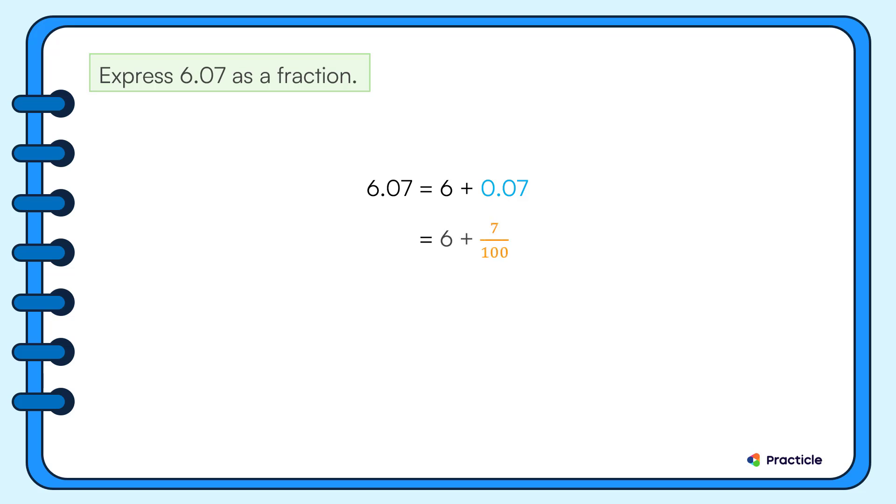This brings us to the last step. Let's put the whole number and the fraction part together. 6 plus 7 out of 100 is 6 and 7 out of 100. This is how we write 6.07 as a fraction.